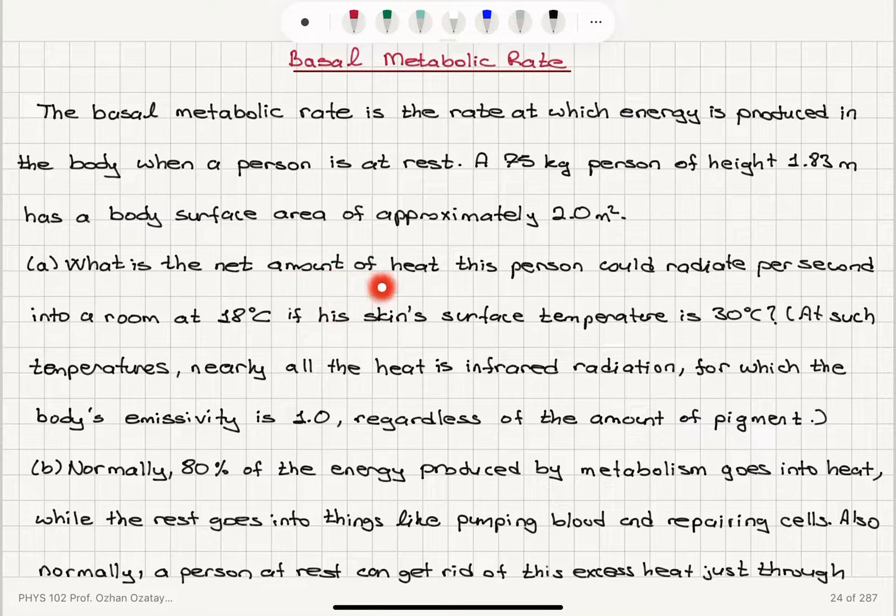What is the net amount of heat this person could radiate per second into a room at 18 degrees Celsius if his skin's surface temperature is 30 degrees Celsius?